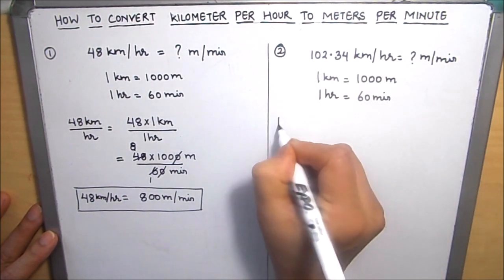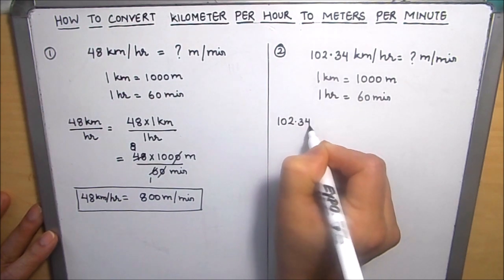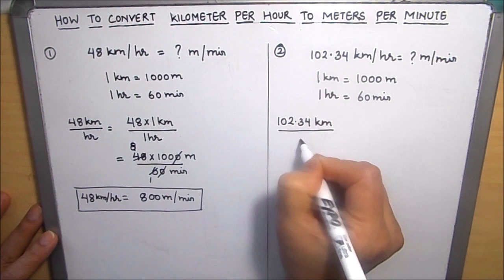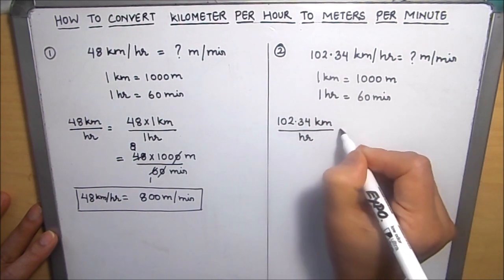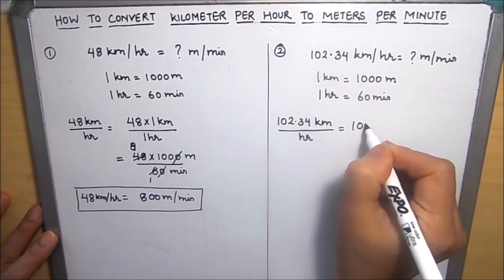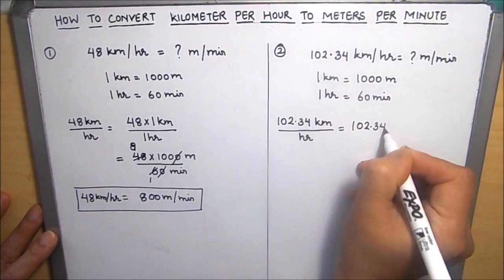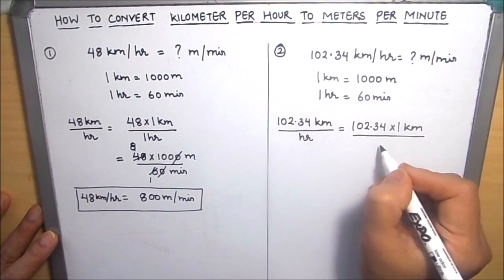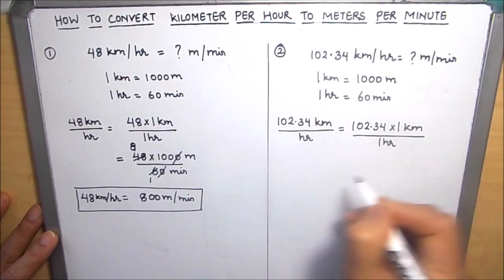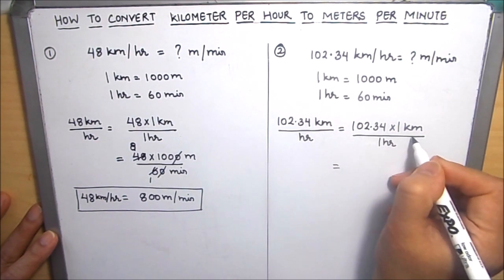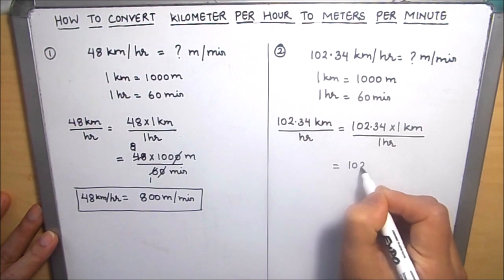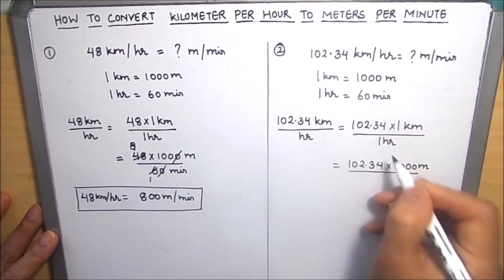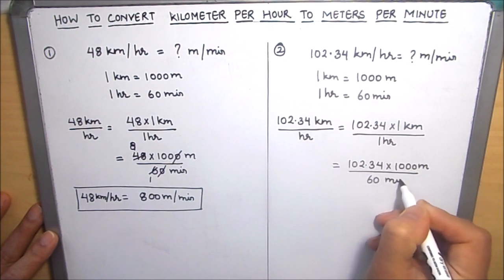Now 102.34 kilometer per hour can be written as 102.34 times 1 kilometer over 1 hour. In place of 1 kilometer, we are going to write 1000 meters, and in place of 1 hour, we are going to write 60 minutes.